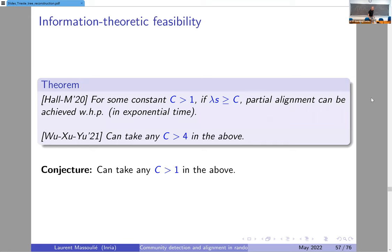Regarding information-theoretic feasibility: we believe the right threshold is lambda·s = 1, and when lambda·s is larger than one, one should be able to align the graphs even in exponential time. What is known for sure today is that if lambda·s is larger than four — not one — then you can align the graphs in exponential time.